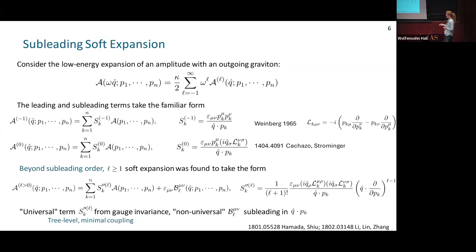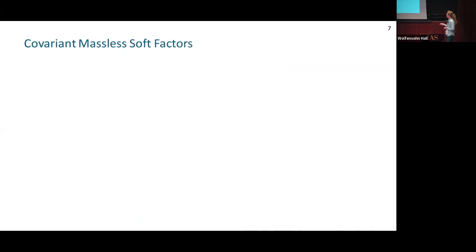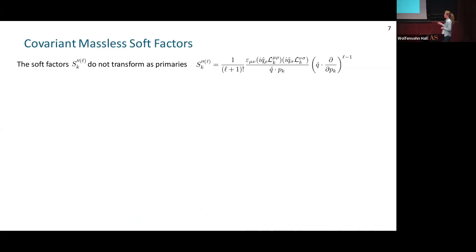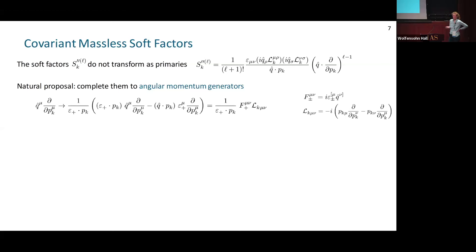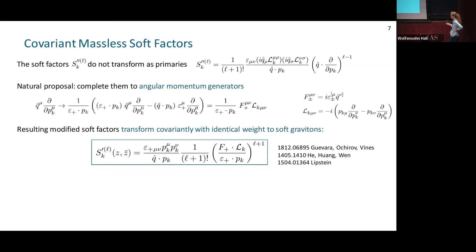I've called it S-double-prime because we'll modify it. We need to modify it because these soft factors S-double-prime do not transform as primaries under conformal transformations — in particular, the power of q-hat dot partial-p is a problem. The natural fix is to complete them to angular momentum generators: taking this q-hat partial-p, multiplying and dividing by epsilon dot p, and pulling in a term that's subleading in q dot p, we find the nice expression (1 over epsilon dot p) times F, where F is the antisymmetric combination of epsilon and q times the angular momentum generator.